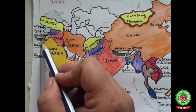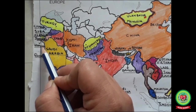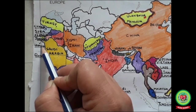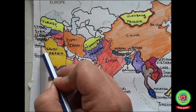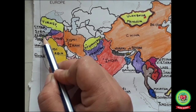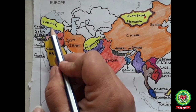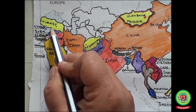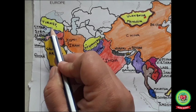Syria — its capital is Damascus. Lebanon — its capital is Beirut — is well known for being a vacation destination for the people of the Persian Gulf. Israel is famous for being the ancestral homeland of Jews; its capital is Jerusalem. Turkey — its capital is Ankara. Turkey, officially the Republic of Turkey, is a transcontinental country located mainly on the Anatolia Peninsula in Western Asia.